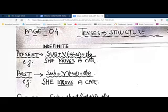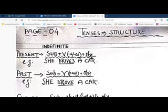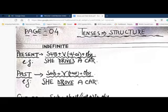For present indefinite, the structure is subject plus verb. You can add 's' or 'es' to the verb according to the number of the subject. If it is third person singular, the verb takes 's' or 'es.' If the subject is plural, no 's' or 'es' is added. For example: 'She drives a car.' This states a present fact — something she does regularly, not something she did in the past.